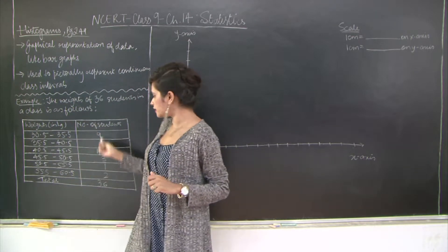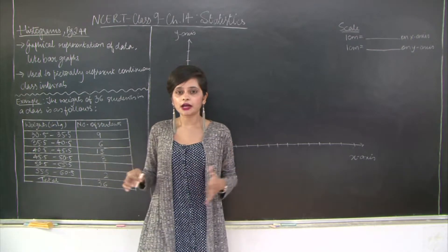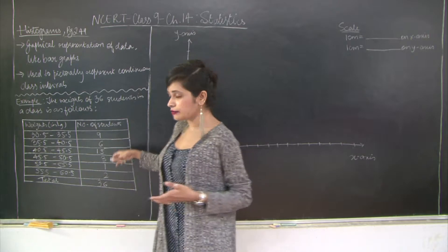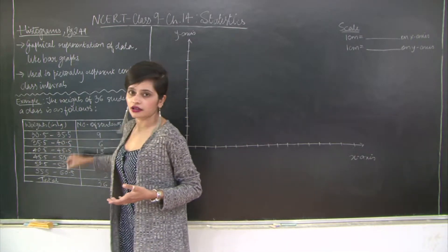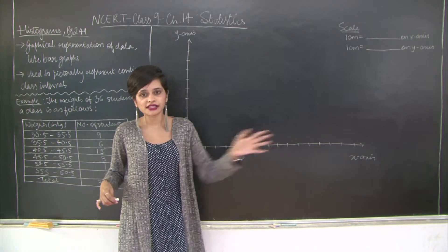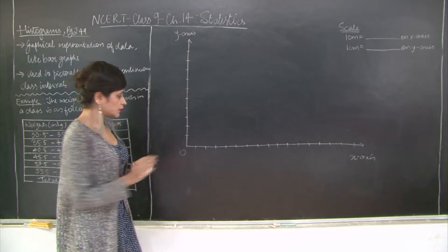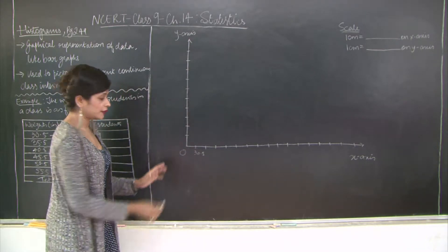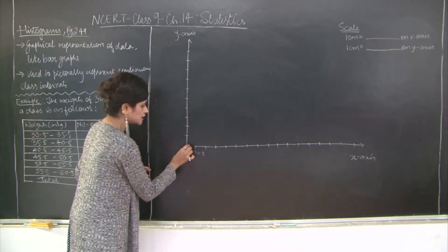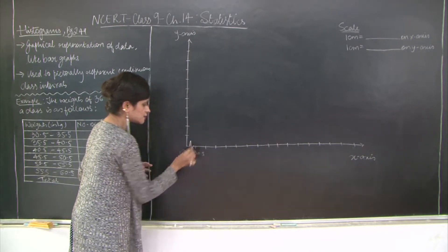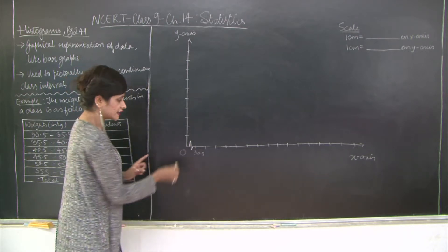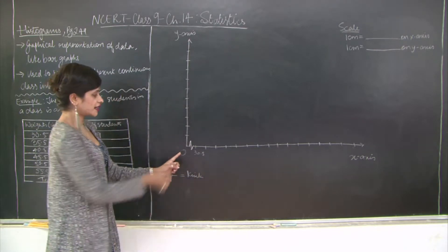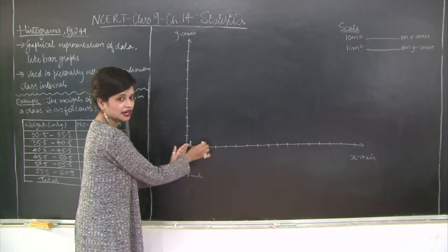These are the variables, the fluctuating values. The number of students can increase or decrease, so we plot these numbers on the x-axis because variables go on the x-axis. Starting with 30.5, zero to 30.5 is a huge gap, so we insert a break called a kink to represent missing values.